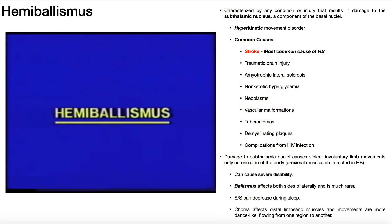The other ways hemiballismus differs from Huntington's has to do with the exact presentation. With Huntington's disease, we see those movements on both sides of the body — it's bilateral — and it tends to affect more of the distal limbs or distal musculature. In contrast, hemiballismus only affects one side of the body, so it's unilateral, and it also tends to affect the proximal muscles rather than distal. So: proximal and unilateral in hemiballismus.